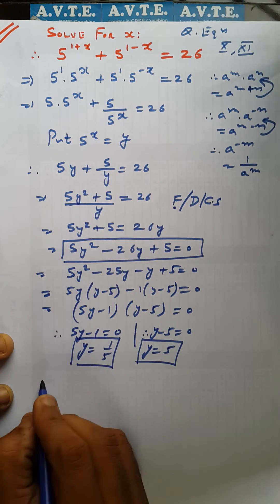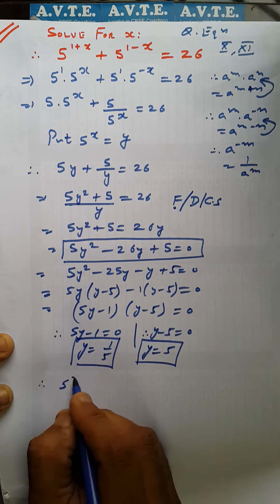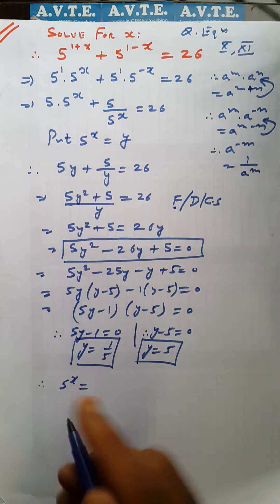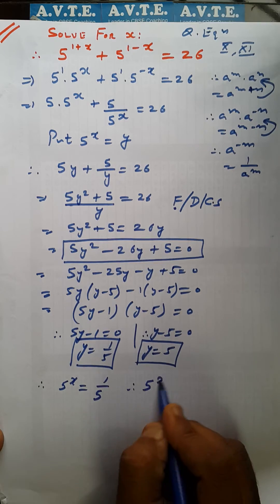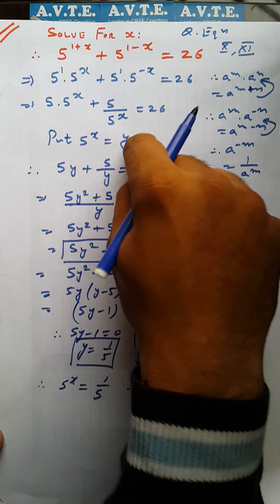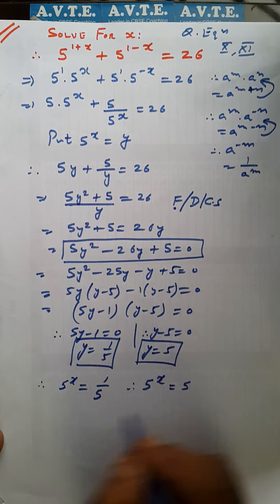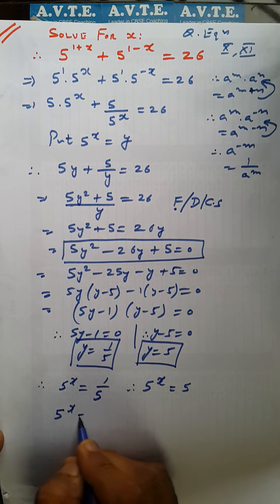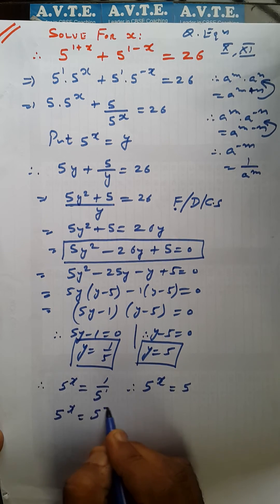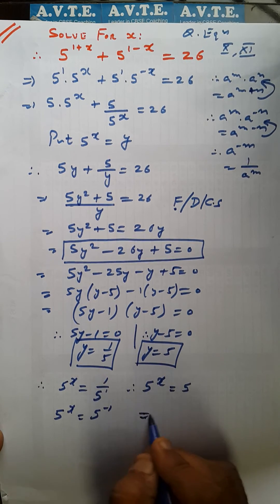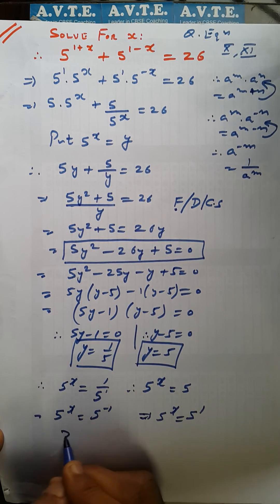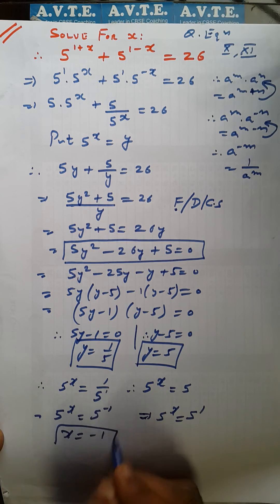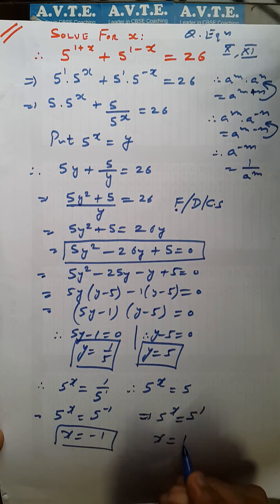But you need to find the answer of x. 5 raised to the power x is equal to y, and y is 1 upon 5. And 5 raised to the power x is equal to y, y is 5. So here 5 raised to the power x is equal to 5 raised to the power minus 1, and here 5 raised to the power x is equal to 5 raised to the power 1. Here the x of answer is minus 1 and the answer of x is 1.